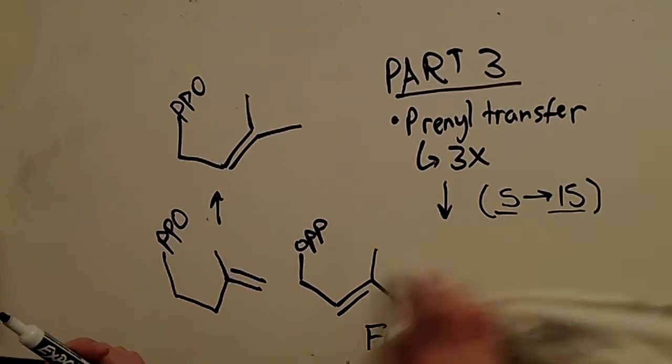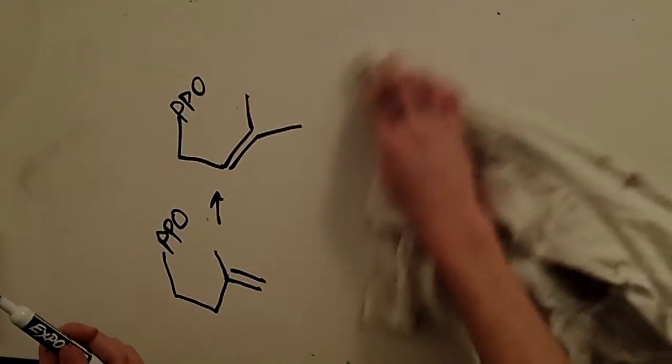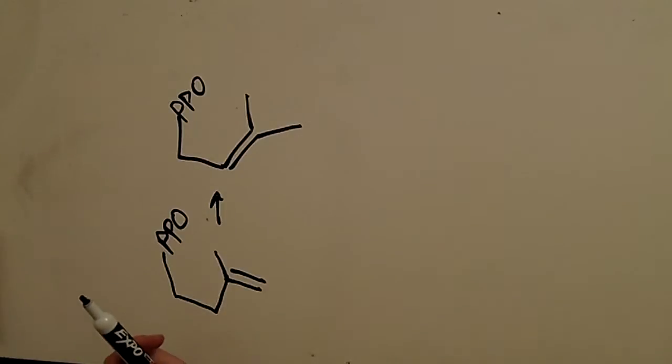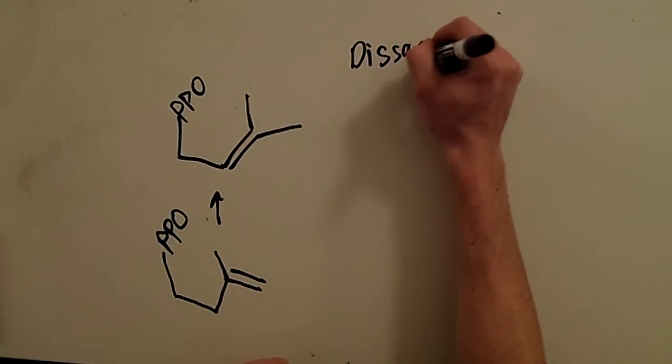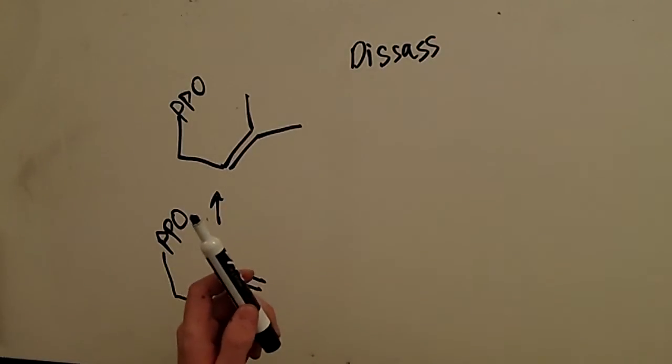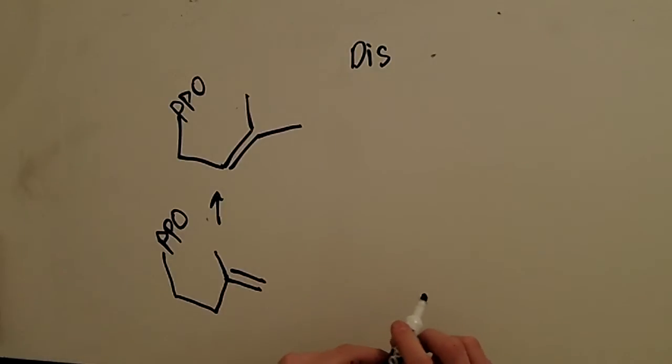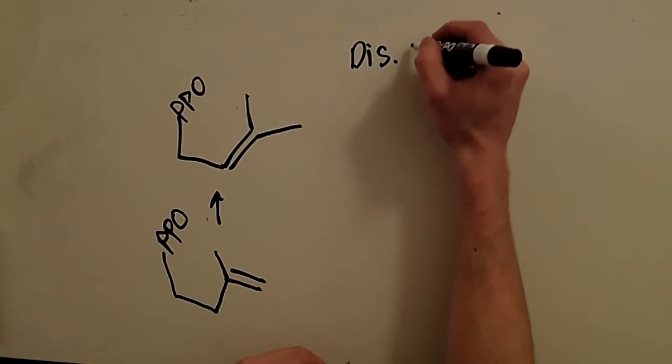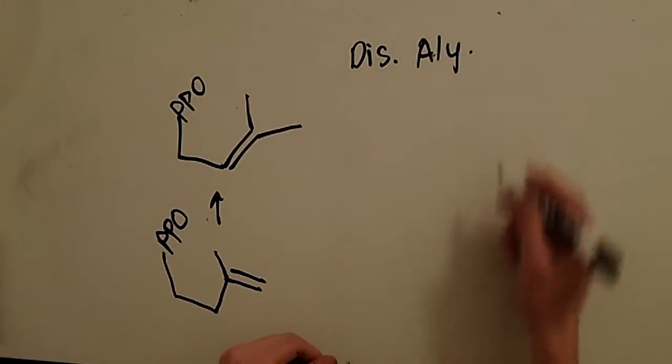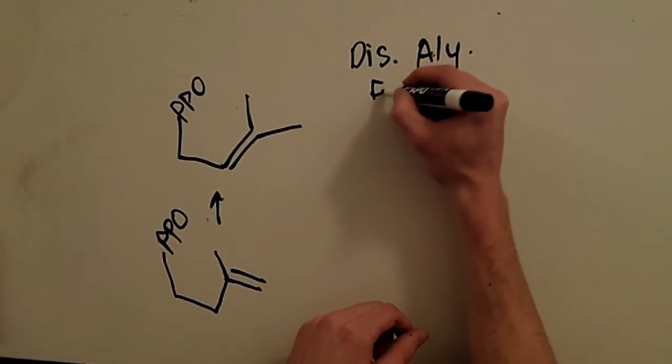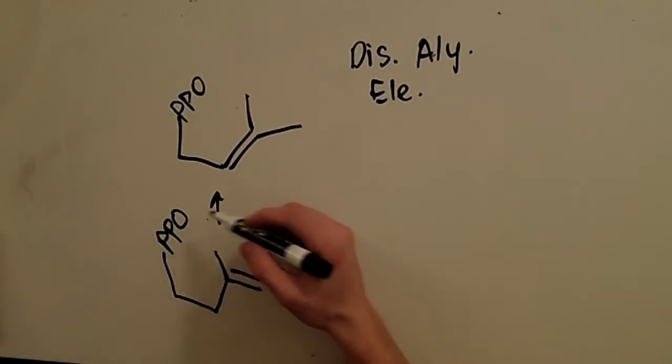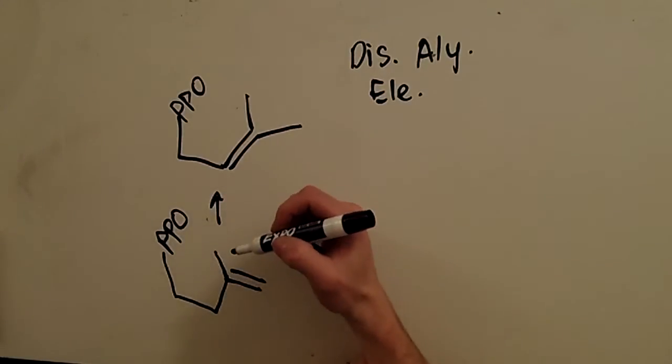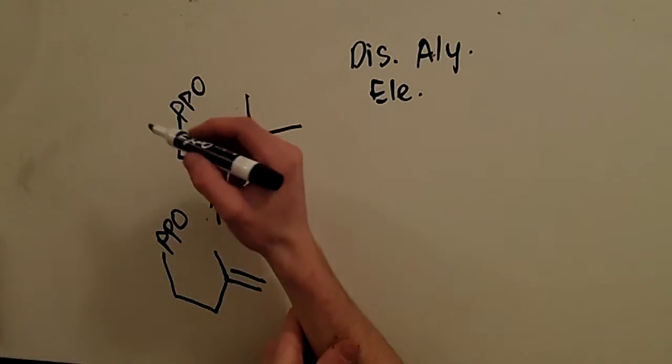Let's look at this prenyl transfer a little closer. Alright, so sometimes this is actually called dissociative electrophilic alkylation. So let's look at this name, dissociative, oh man, I can't spell. So dissociative allelic electrophilic. Okay, so first of all there's going to be a dissociation, and that is going to be on the dimethylallyl pyrophosphate.